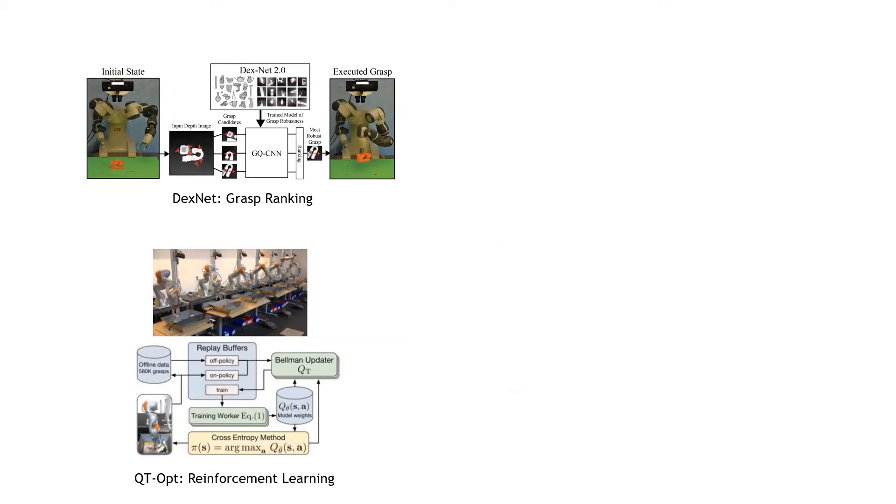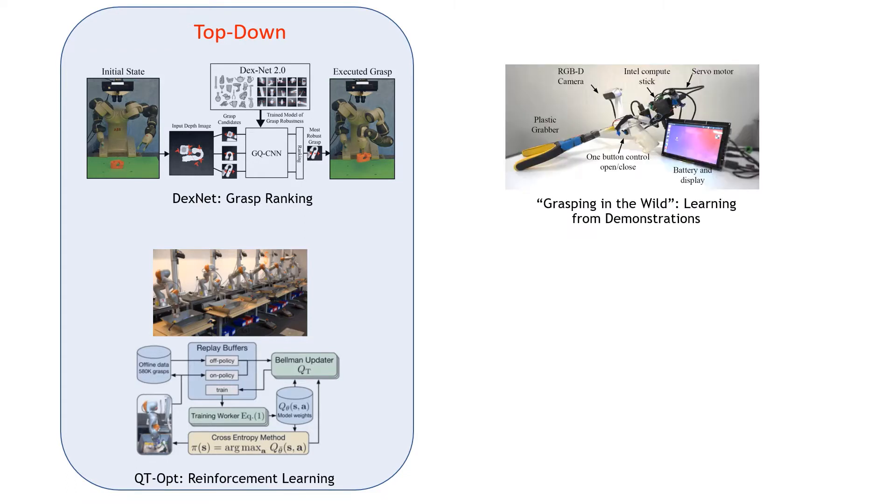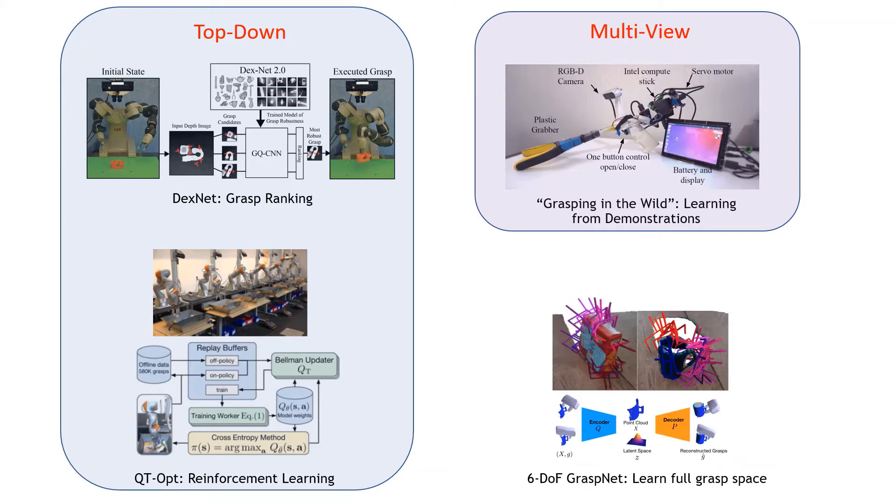In recent years, we have seen strong progress in learning-based grasping from very different perspectives. Some great leaps forward were DexNet, a grasp-ranking method, and the RL method QtOpt. However, both are restricted to top-down grasps. Recently, grasping in the wild has shown how to learn grasps from human demonstrations, but multi-view cannot always be ensured. 6DOF GraspNet introduced full object-centric 6DOF grasp predictions, but it is still hard to learn the 6DOF grasp distribution directly on scenes.